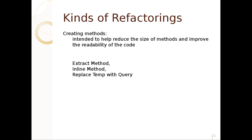There are different kinds of refactorings. One kind is creating methods — these are meant to reduce the size of methods, improve readability, and give chunks of code names. Extract method takes code from an existing method and extracts it. Inline method extracts a small method and in C++ makes it inline so you don't have to keep retyping. Replace temp with query takes temporary variables and makes a query method that answers a question like 'what is the total cost?' — replacing computation stored in a temp variable with a reusable method call.